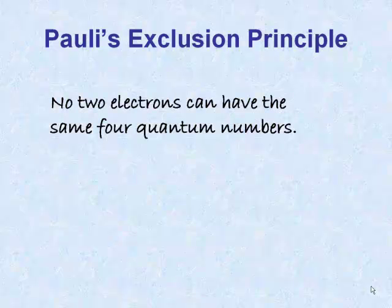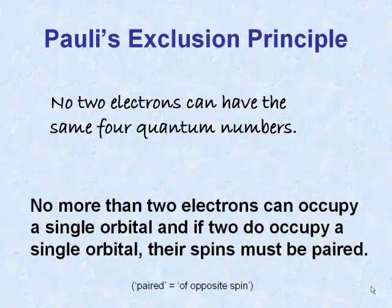Another way of stating this is that no more than two electrons can occupy a single orbital, and if two do occupy a single orbital, their spins must be paired.